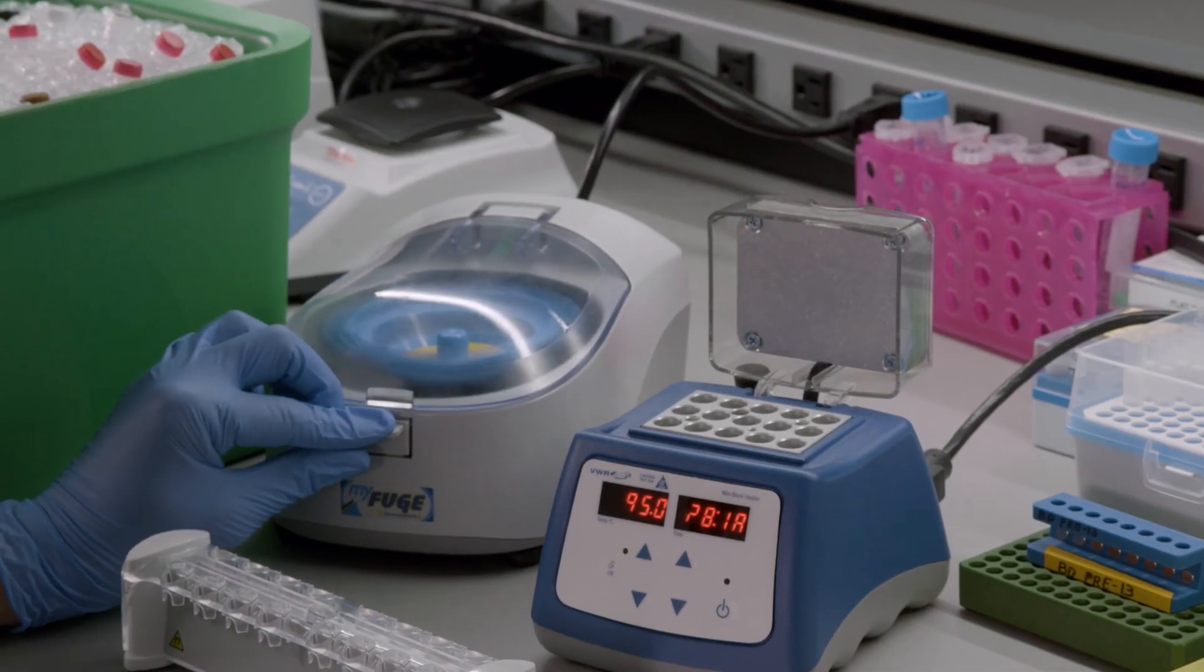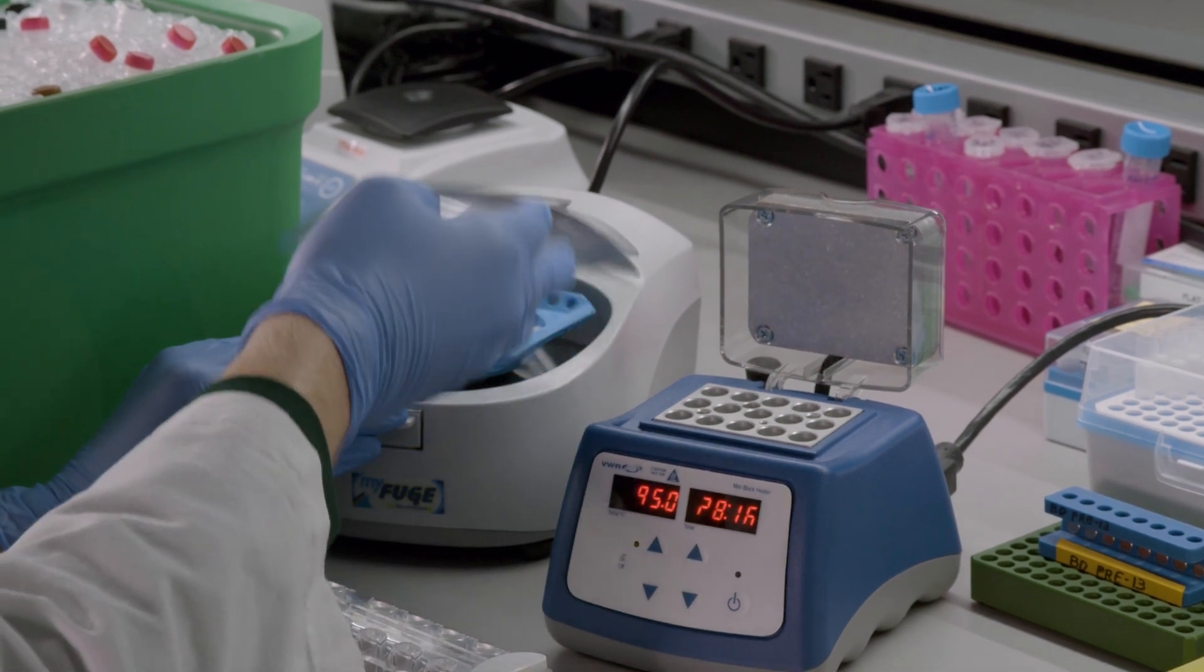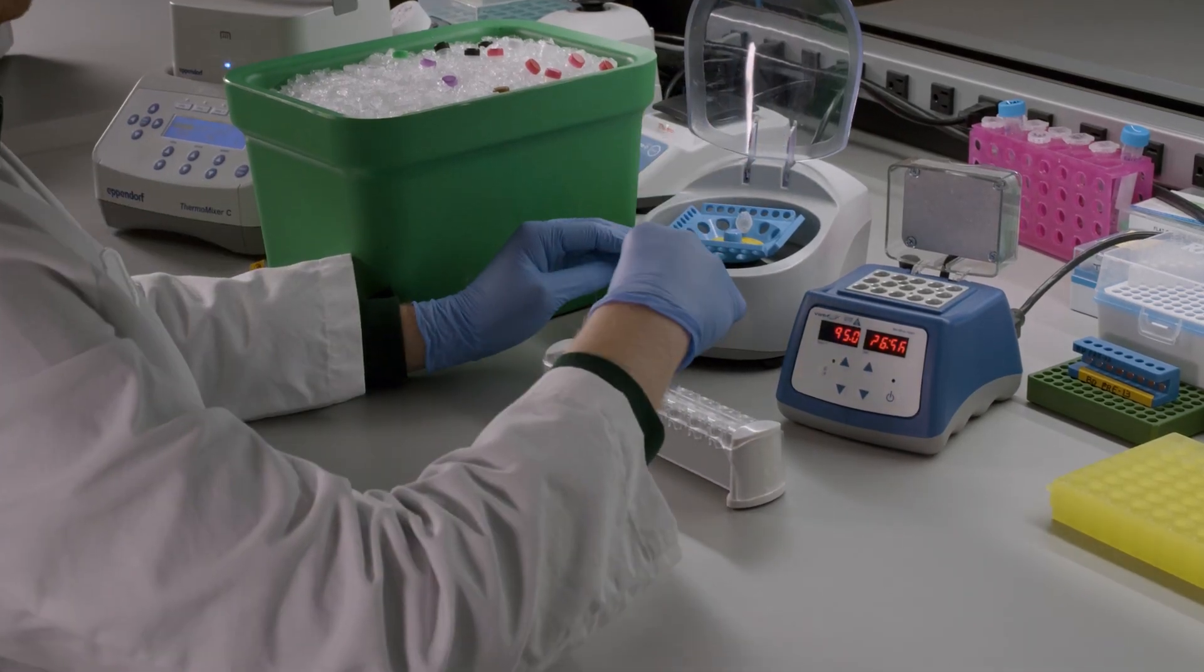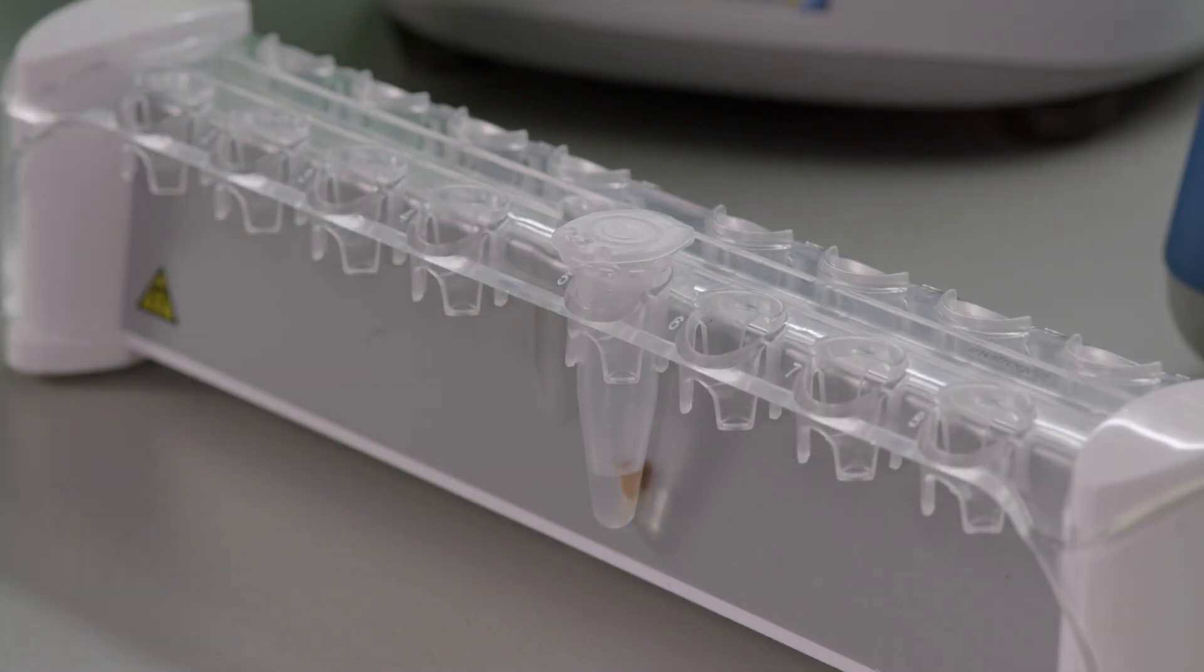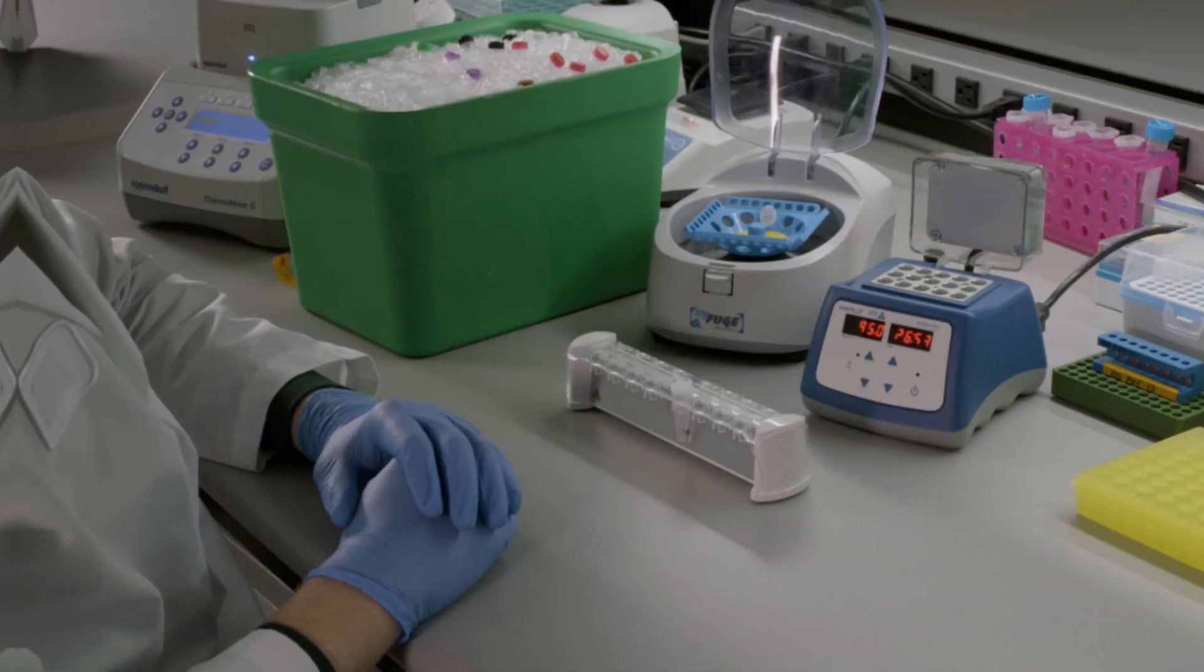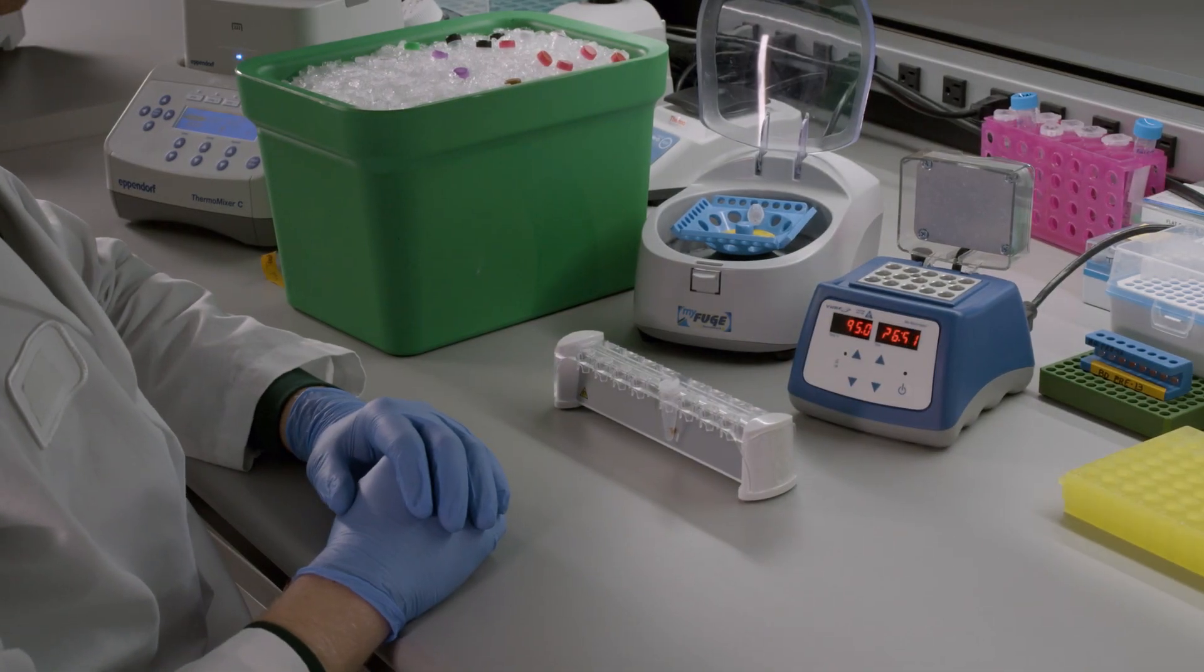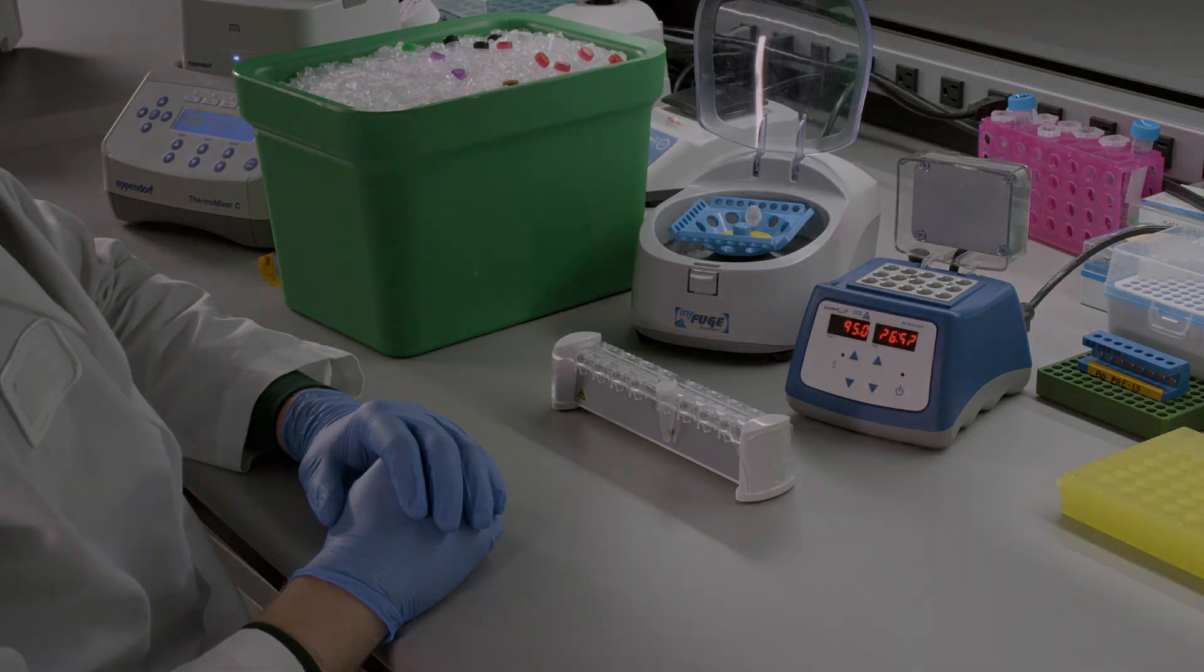After incubation is complete, briefly spin the tube then place it on a magnet until the beads bind to the side of the wall. If you used AbSeq or sample tag antibodies during the experiment, save the supernatant for future processing. If no antibodies were used, like in this example, the supernatant can be discarded.